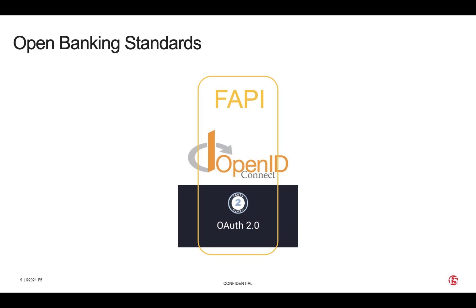As already hinted, the bedrock of open banking specifications is OAuth, which implements the access token mechanism, on top of which OpenID Connect is used to transmit end user information. There is an additional layer of standards named Financial Grade API (FAPI), which can be thought of in a couple of ways: first, as a narrowing down of the protocols supported by OAuth and OIDC to only the most secure ones.